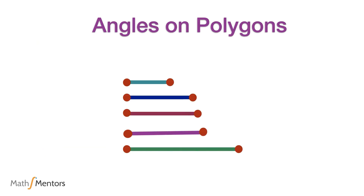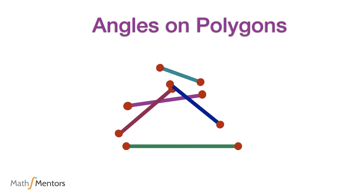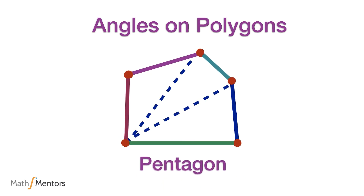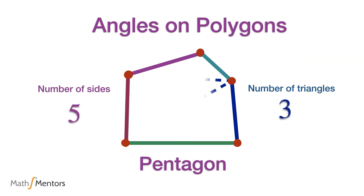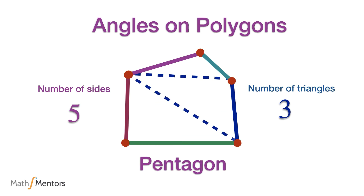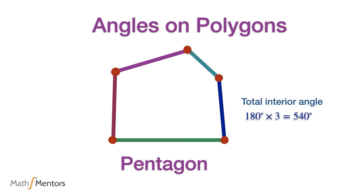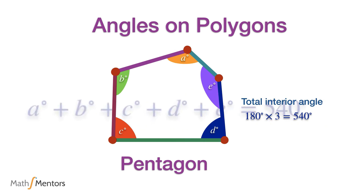We can also make polygons with five straight lines — this is known as a pentagon. If we choose any vertex from this pentagon and draw lines from that vertex to all other non-adjacent vertices, we can divide this shape into three triangles. As each triangle adds up to 180 degrees, the total interior angles on this pentagon add up to 540 degrees.